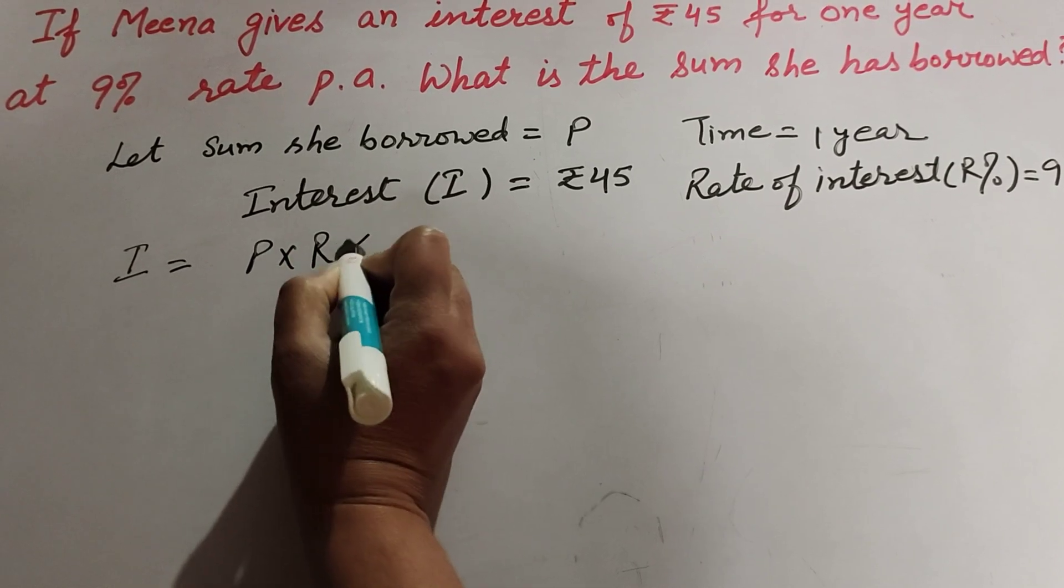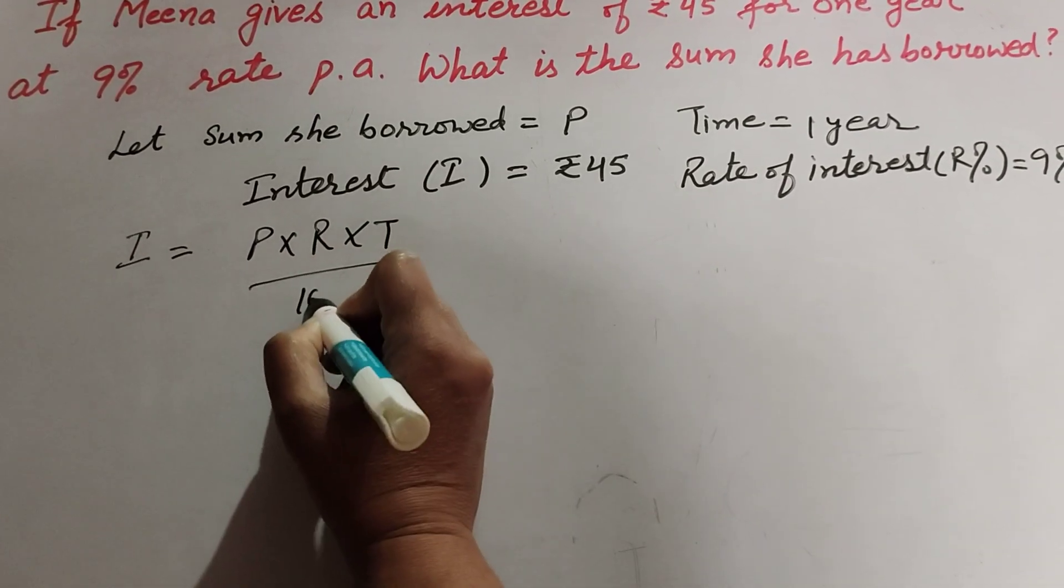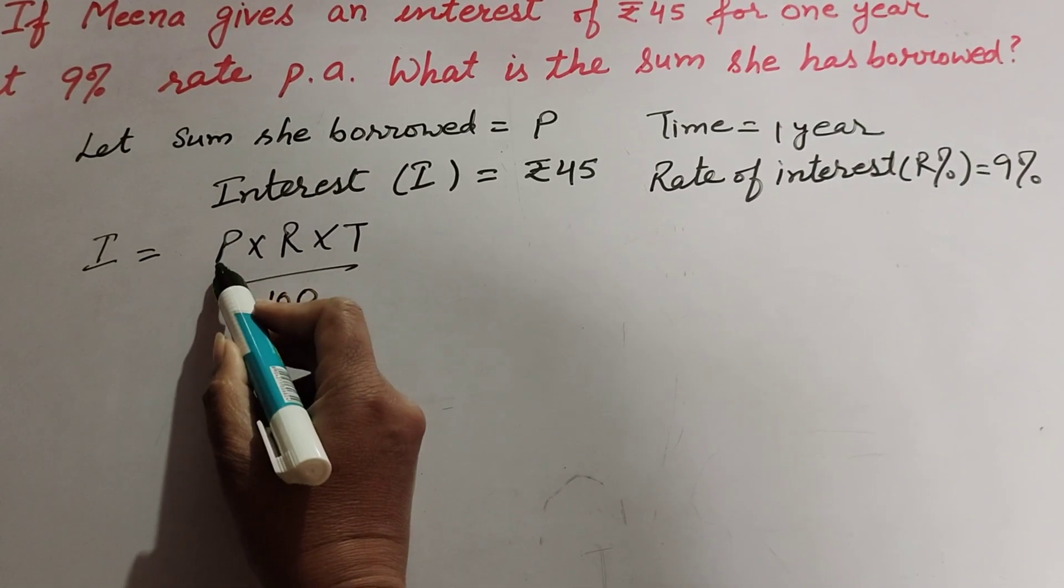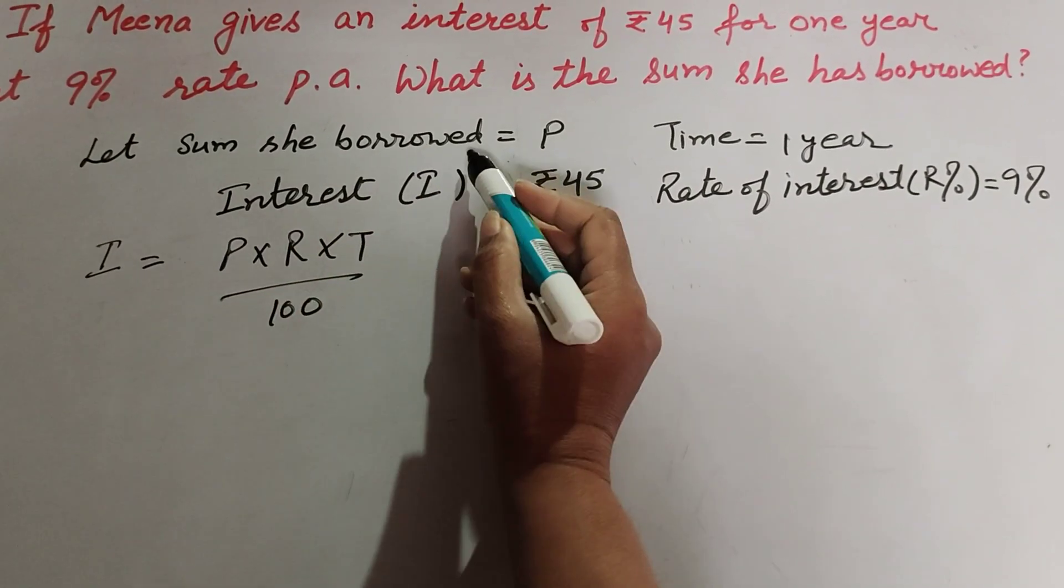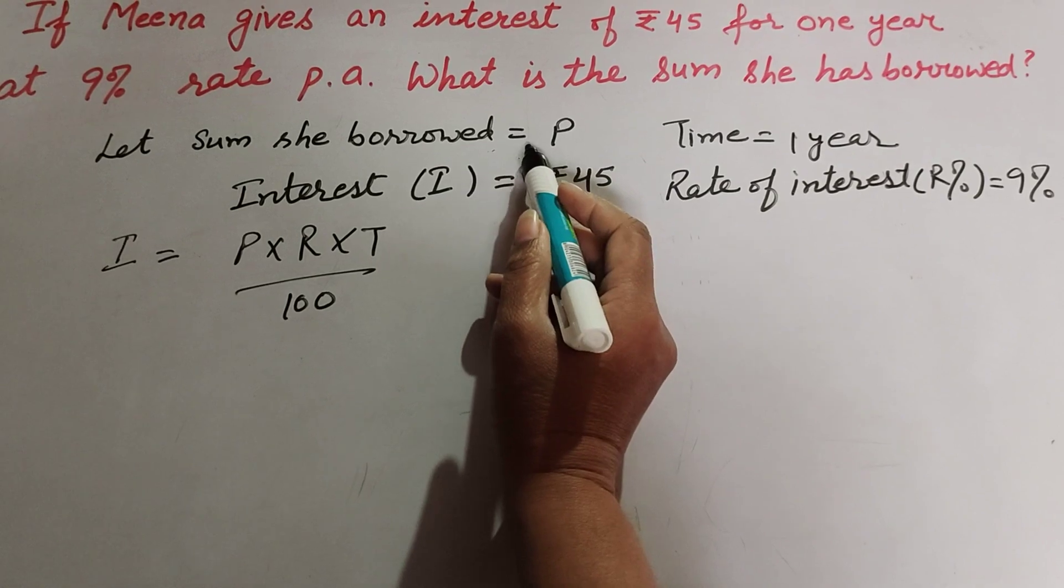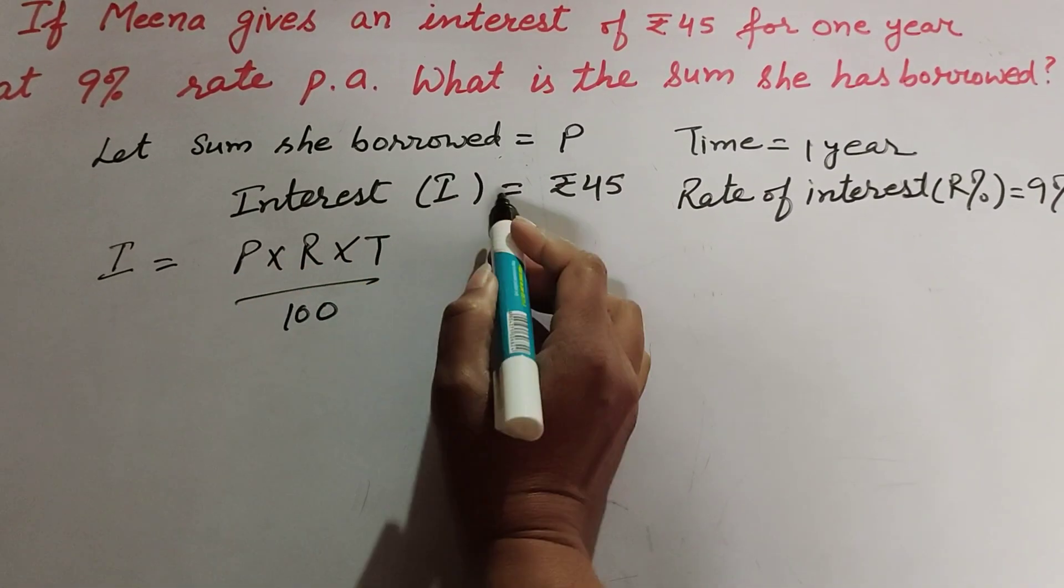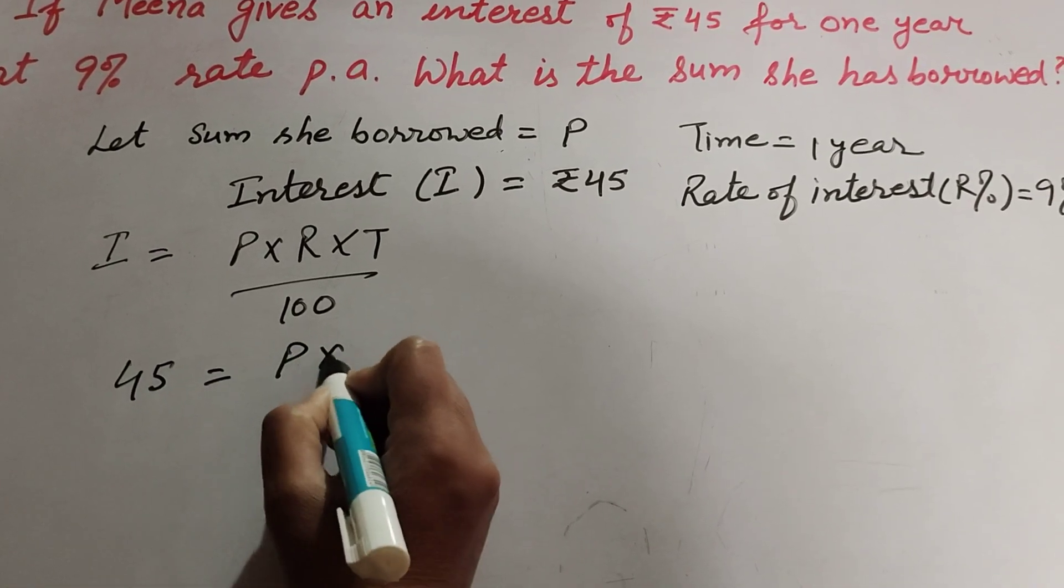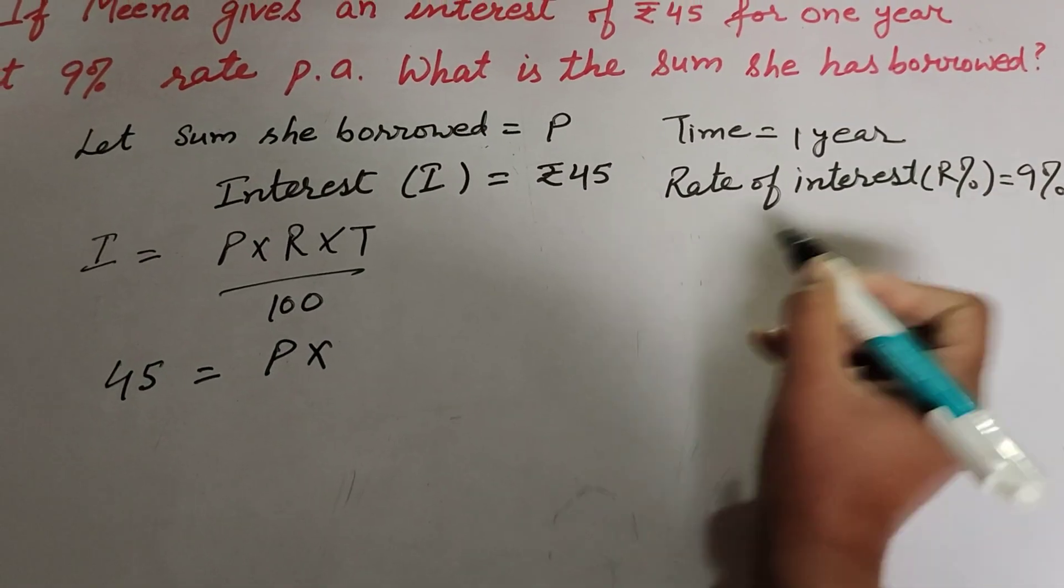In this formula, P is the principal that we have to find - the sum she borrowed. I is the interest, which equals 45. So 45 = P × R × T / 100, where R is 9 and T is 1 year.